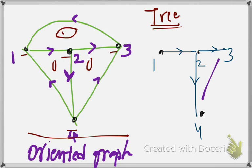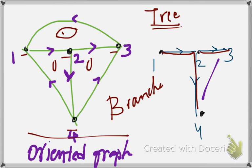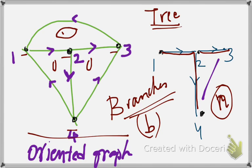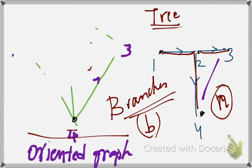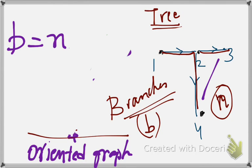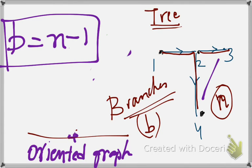There is something called branches in a tree. 1-2 is a branch, 2-3 is a branch, and 2-4 is a branch. These are called the branches of a tree. If you notice, the number of branches, denoted by B, and the number of nodes 1, 2, 3, 4 denoted by N — the number of branches B is equal to N minus 1.